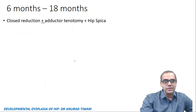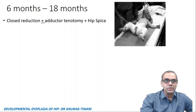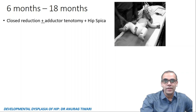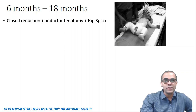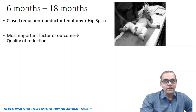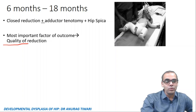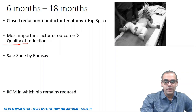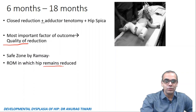From 6 months to 18 months, treatment is reduction (closed or open) plus or minus adductor tenotomy, plus hip spica. Reduction is performed under C-arm guidance with arthrography, where dye is injected into the hip joint to assess the cartilaginous femoral head. The most important factor in reduction is quality of reduction, assessed using the safe zone concept by Ramsey — the range of motion in which the hip remains reduced.